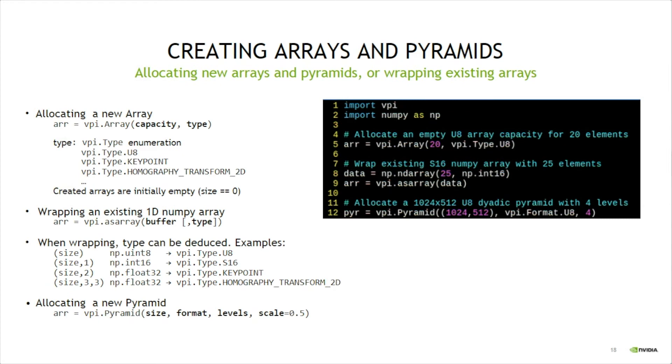Creating VPI arrays and pyramids is similar. For allocating arrays, the user passes the array capacity and element type, as can be seen on line 5. The array will be initially empty, that is, its size will be 0.